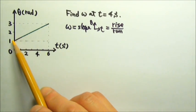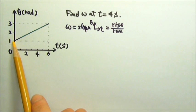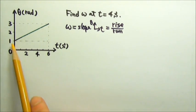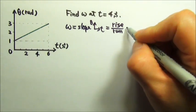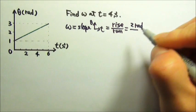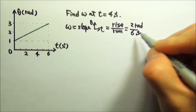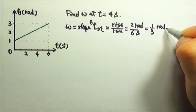The rise is 1 to 3, so the rise is 2. The run is from 0 to 6, so the run is 6. So the rise is 2 radians, the run is 6 seconds, and we get 1 third radians per second.